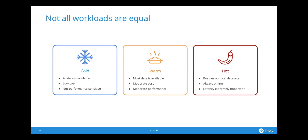Then you go up to hot data — business-critical data sets. You're likely not going to have all your data in these hot, at-your-fingertips systems for cost reasons. But business-critical data sets are always online, with dedicated resources, and latency is extremely important. This is a spectrum, and different systems do well at different parts of it. It's also interesting to think about moving data between temperatures, because a given data set is not inherently cold, warm, or hot — it's an artifact of how you're using it. As you learn more ways to get value out of a dataset, you may move it from a cold-access system into a warm or even hot-access system.